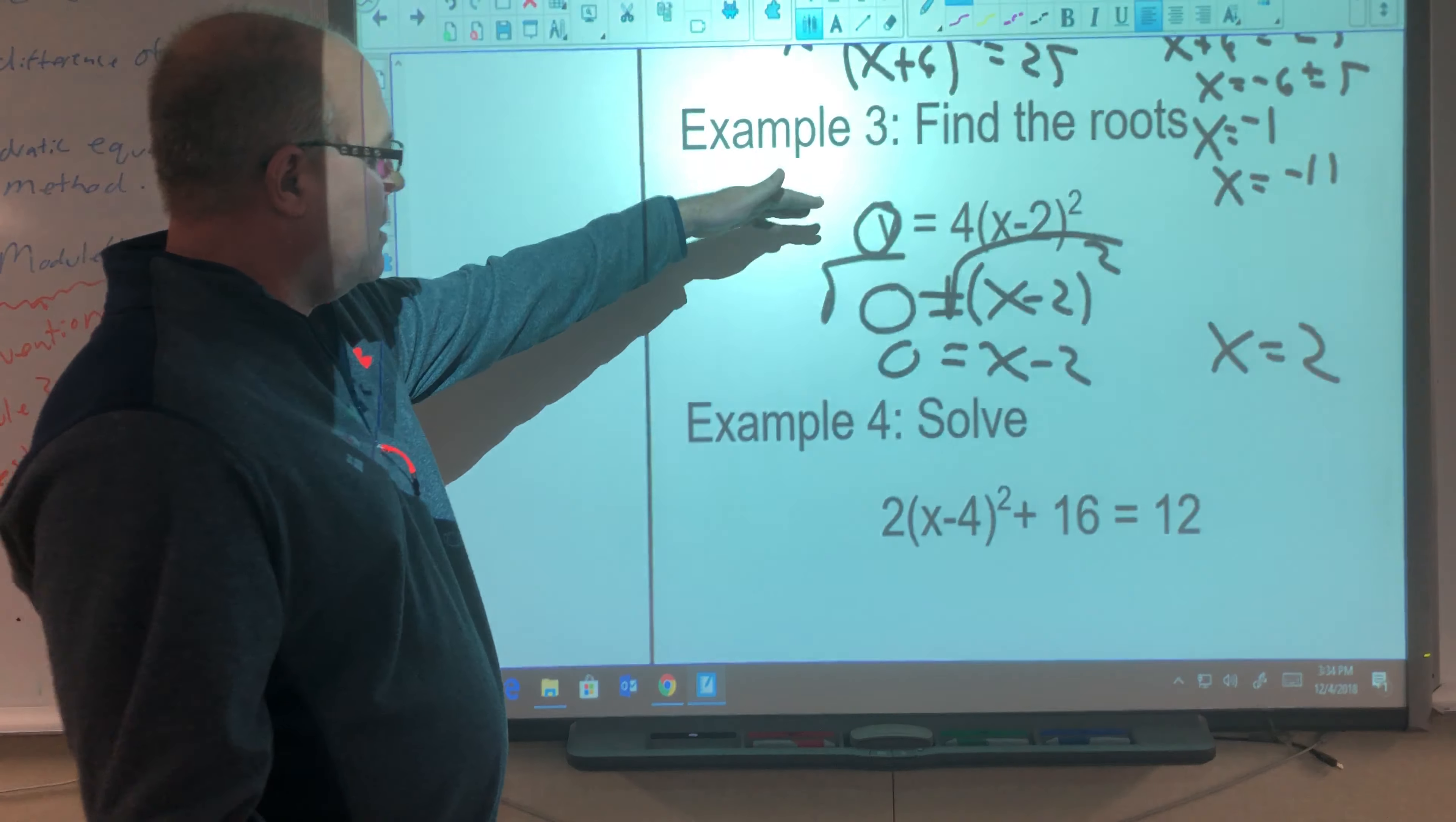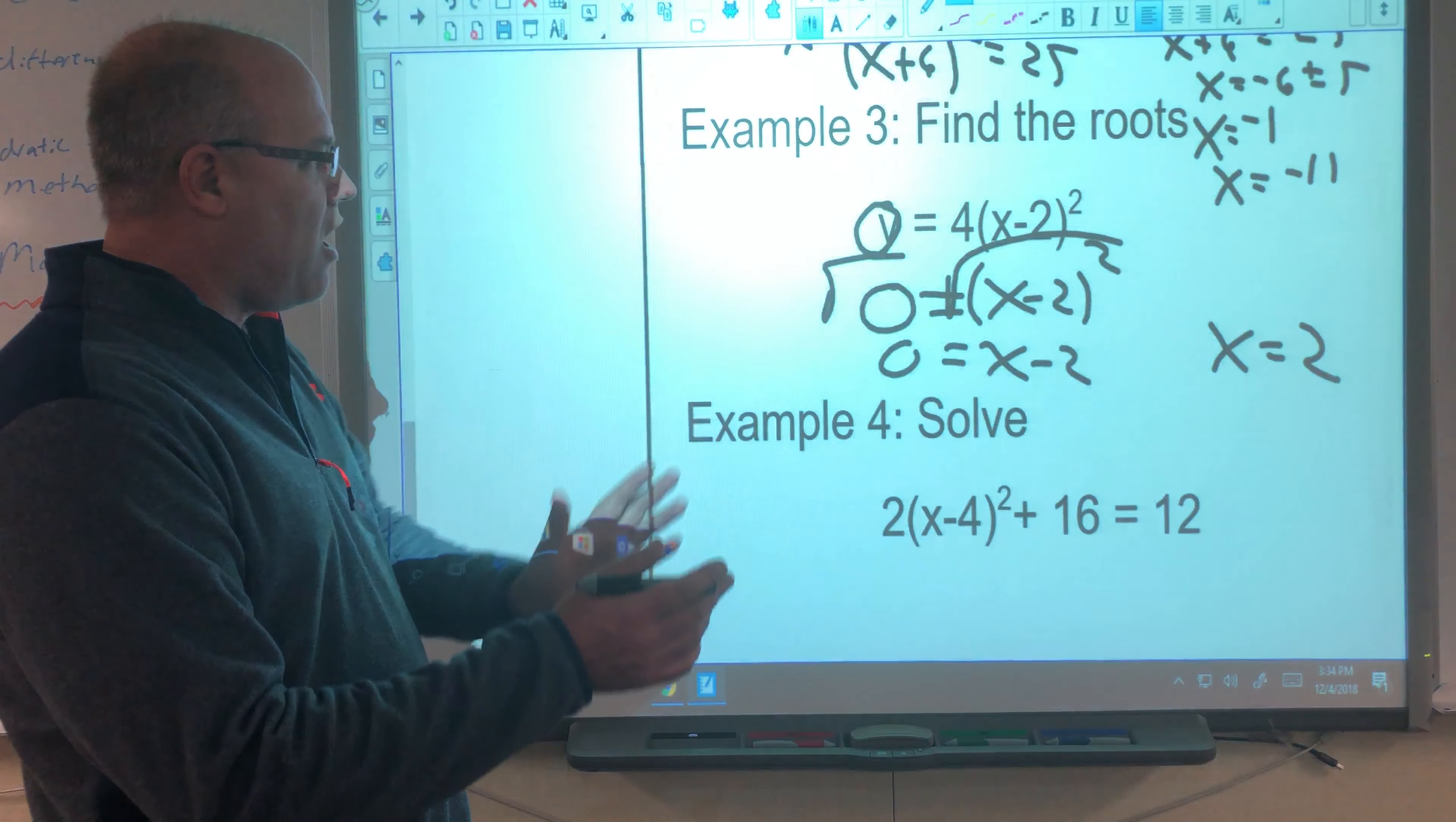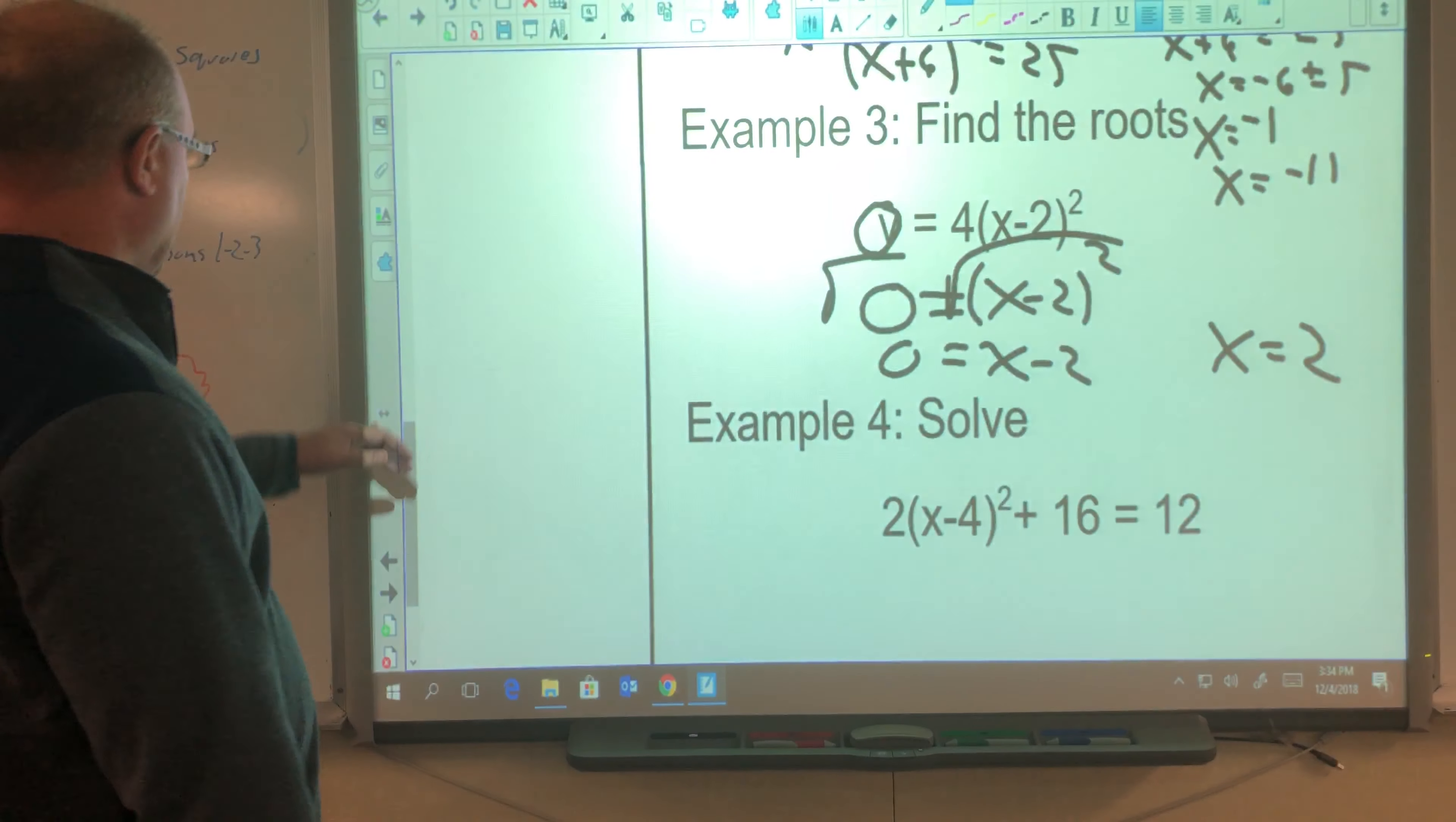What does that mean? What do you know about the parabola? If you looked at the graph, that's right, the vertex is on the x-axis at the point 2 comma 0.